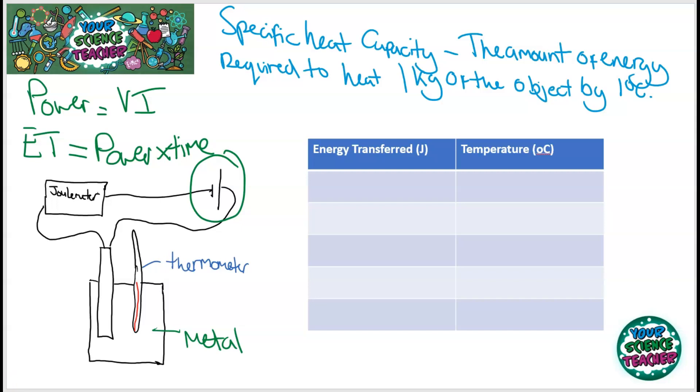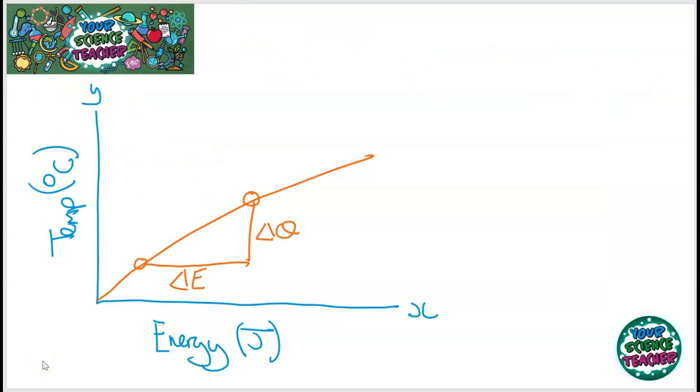But either way you do it, you'll end up with values for energy transferred and temperature raised. From this, you can then draw a graph. Remember, the independent variable goes on the x-axis and the independent variable goes on the y-axis. So, the independent variable in this practical is the amount of energy to transfer.